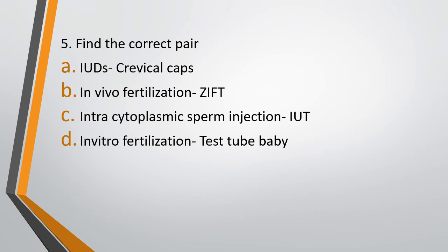Question 5. Find the correct pair. The correct answer is Option D — In vitro fertilization and Test tube baby is the correct pair.